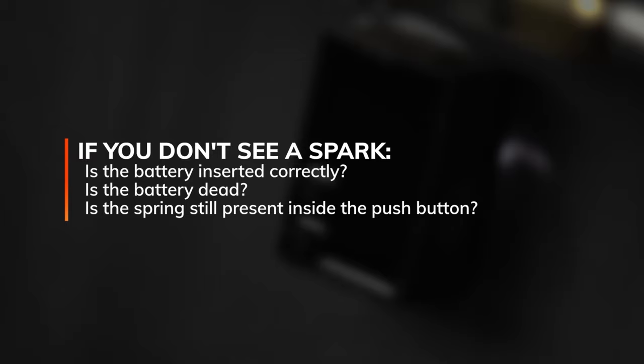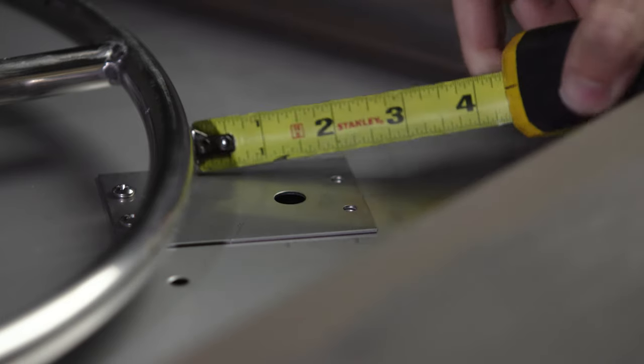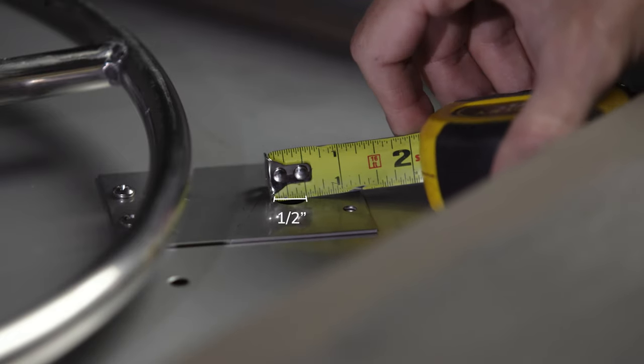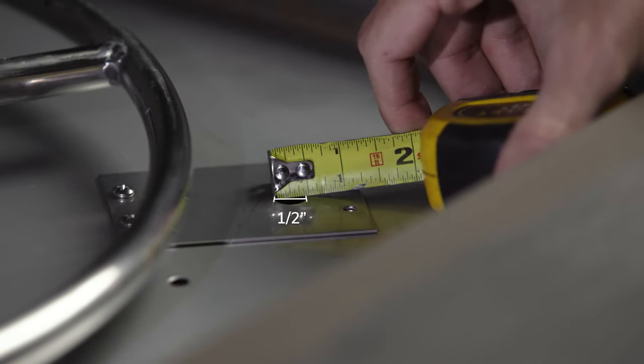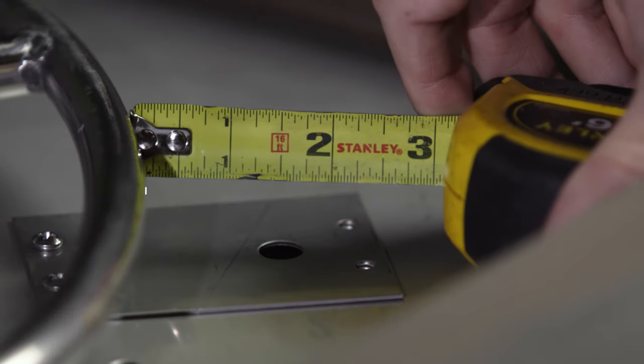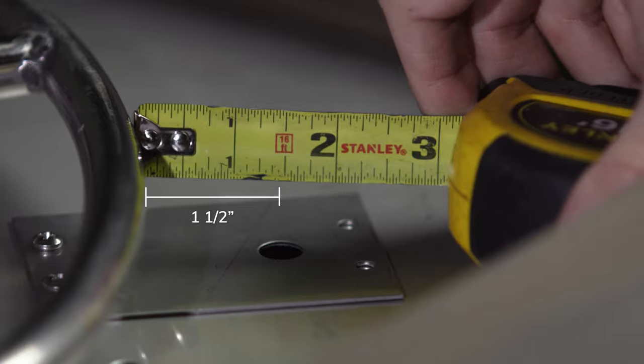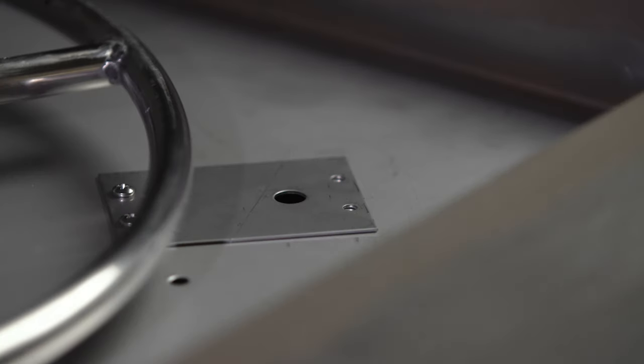Next, it's time to install the igniter probe. Make sure the igniter hole on your burner pan is a half inch in diameter. This should be approximately one to one and a half inches away from the outermost fire ring, with the goal of the probe being right next to a burner hole.